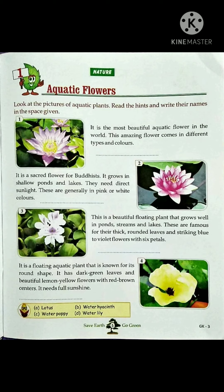This is a beautiful floating plant that grows well in ponds, streams, and lakes. These flowers are famous for their thick, rounded leaves and striking blue to violet flowers. These blue and violet mixed flowers are very beautiful, with six petals.